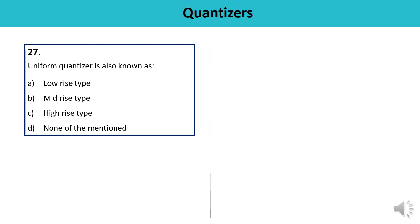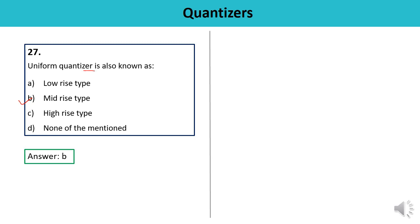Question 27: Uniform quantizer is also known as — low-rise type, mid-rise type, high-rise type, or none? Uniform quantizer is also known as a mid-rise type quantizer. There are two types of uniform quantization: mid-rise and mid-tread, differing in how the signal passes through the origin. The answer is B.